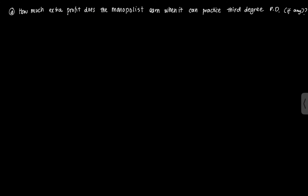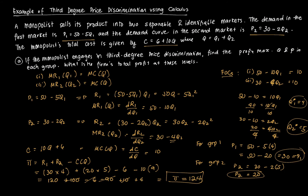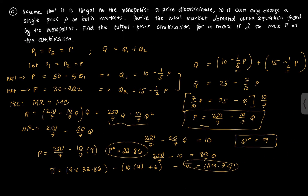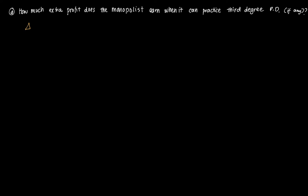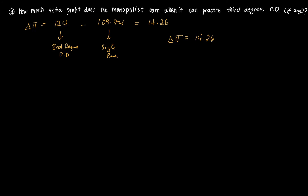The last question compares the two cases. The profit under third-degree price discrimination is 124, while under a single price it is 109.74. The difference is 124 minus 109.74, which equals 14.26. Therefore, the monopolist gains an extra 14.26 by practicing third-degree price discrimination.